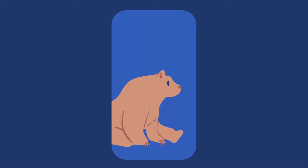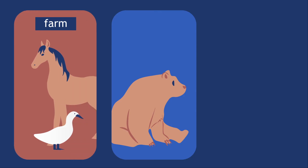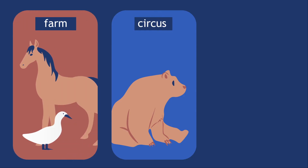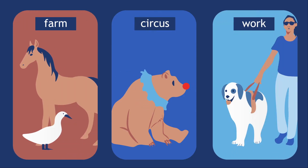The same concept of a bear as an animal may appear in different taxonomies that are organized by different criteria. Perhaps another taxonomy classifies animals by geographic region or their association to humans, such as farm animals, circus animals, or work animals.